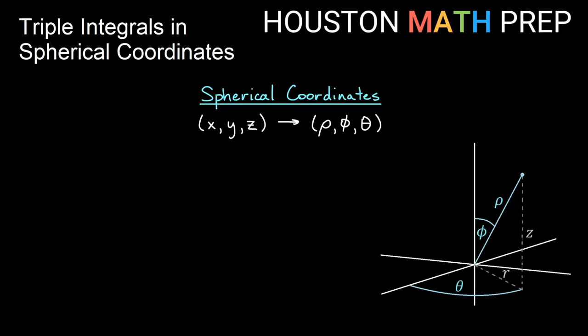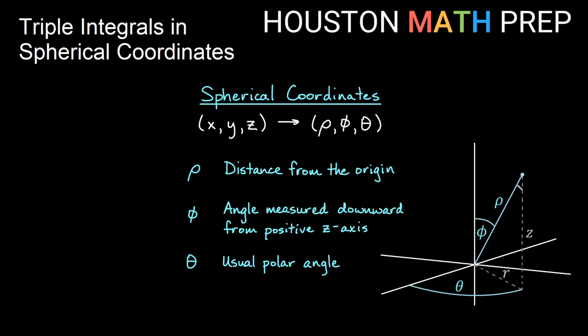Rho tells the distance some point is from the origin in 3D space. Remember that r is the distance out from the z-axis, whereas rho is the distance from the origin itself to the point. Phi is the angle measured downward from the positive z-axis, and theta is the usual polar angle measured in the xy plane counterclockwise if you're looking from above.